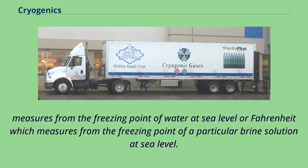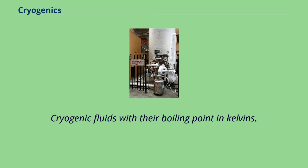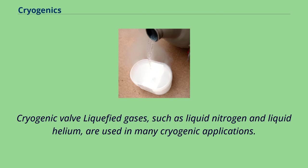These scales differ from more usual scales such as Celsius, which measures from the freezing point of water at sea level, or Fahrenheit, which measures from the freezing point of a particular brine solution at sea level. The word 'cryogenic' stems from the Greek words meaning 'cold' and 'generating.'